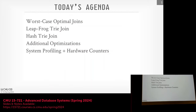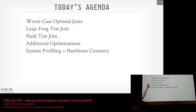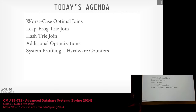For background: worst-case optimal joins is the category of implementations we'll see — multi-way joins being the idea that we're joining more than just two tables, and the terms are used interchangeably. The idea of multi-way joins existed in the literature back in the 80s, but worst-case optimal implementations came along in the late 2000s. First we'll look at what worst-case optimal joins are, then one of the earliest implementations — LeapFrog tri-join — then the German hash tri-join as an optimization of the data structures over LeapFrog, and then quick optimizations from DuckDB. I also want to briefly talk about how to do system profiling and hardware counter stuff.